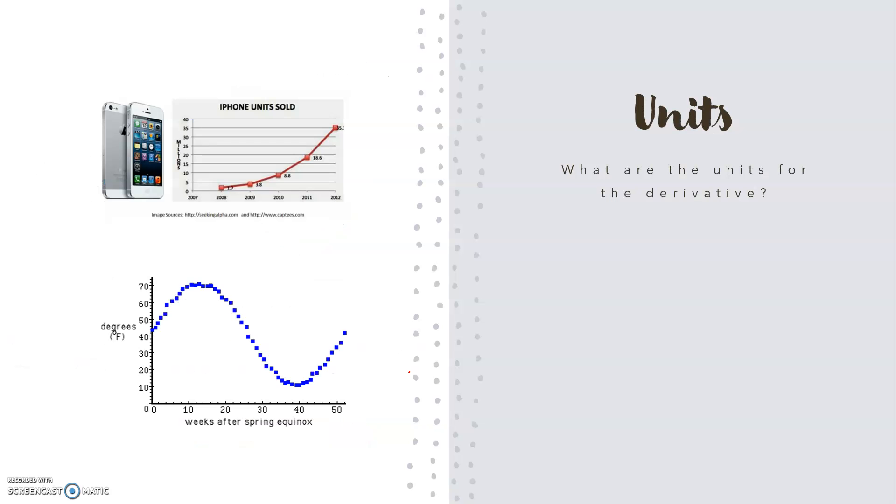A really good way to understand what your derivative is telling you is to take a look at the units. Since the derivative tells you slope, you're looking at units for rise over run. So if I were looking at this iPhone example, the units would be millions of phones per year.